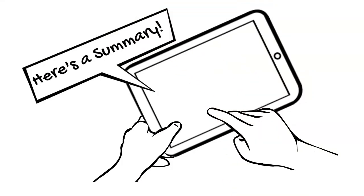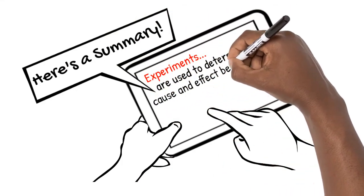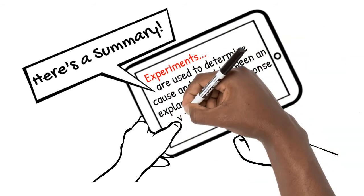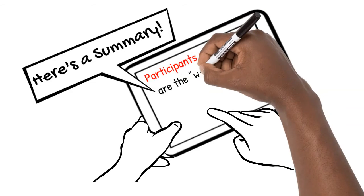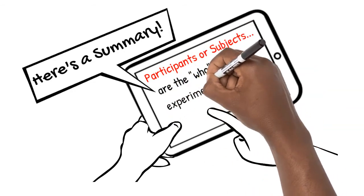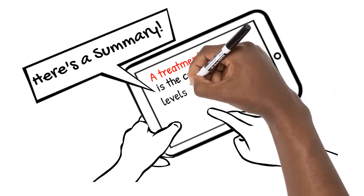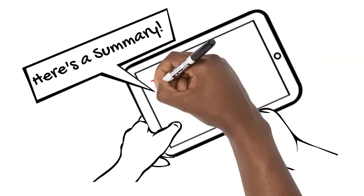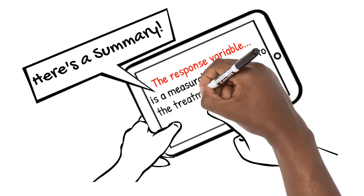Here's a summary of what we've learned. Experiments are used to determine the cause and effect between an explanatory variable and a response variable. Participants or subjects are the who of our experiment. A treatment is the combination of levels of all factors assigned to each subject. The response variable is a measurable response to the treatment.